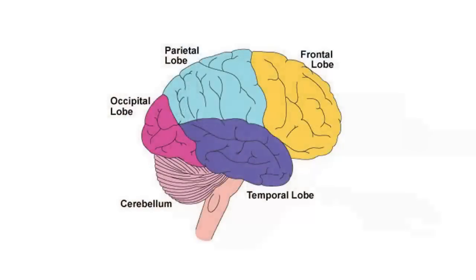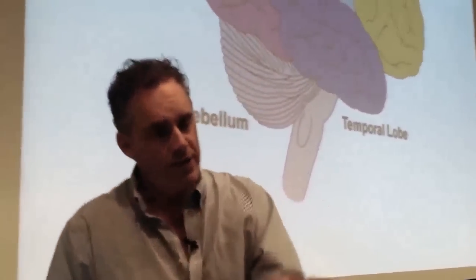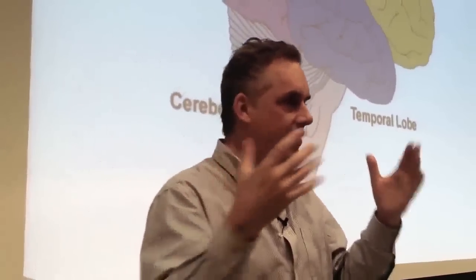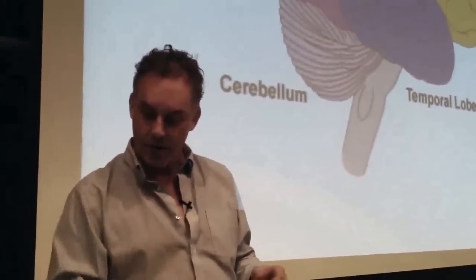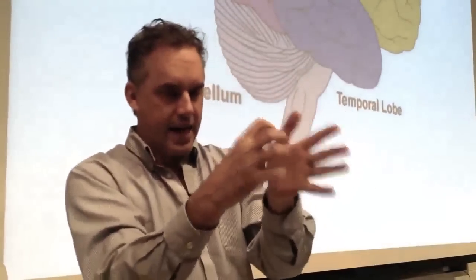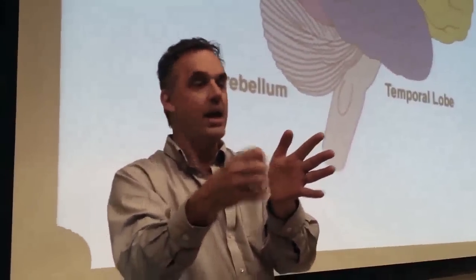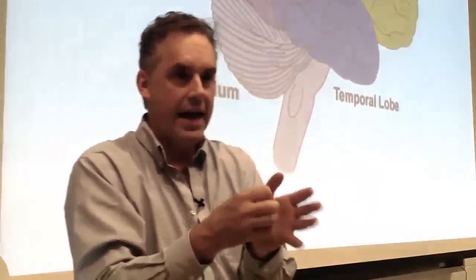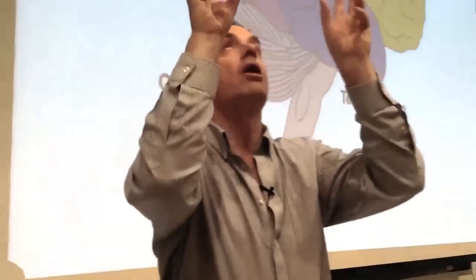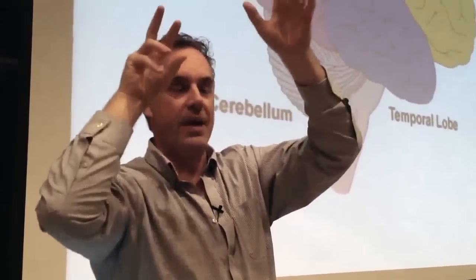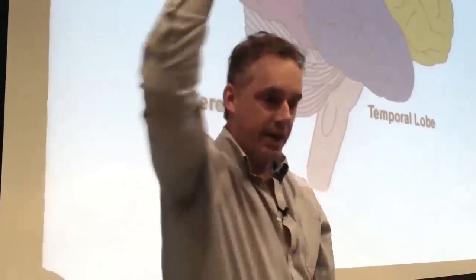The temporal lobe enables you to hear, roughly speaking, and there's a lot of memory there too. And the frontal lobe seems to allow you to make voluntary movements at the highest level of abstraction. Then the prefrontal cortex — right at the front — evolved out of the motor strip. It enables you to represent potential motor movements before you implement them: you can divorce actions from your body, represent them in an abstract space, run them as simulations, calculate the outcome, and then implement them — or not.